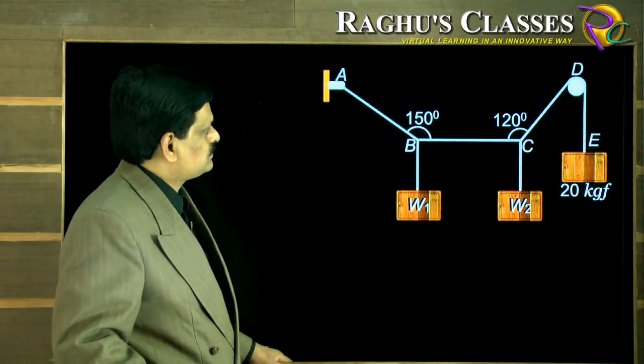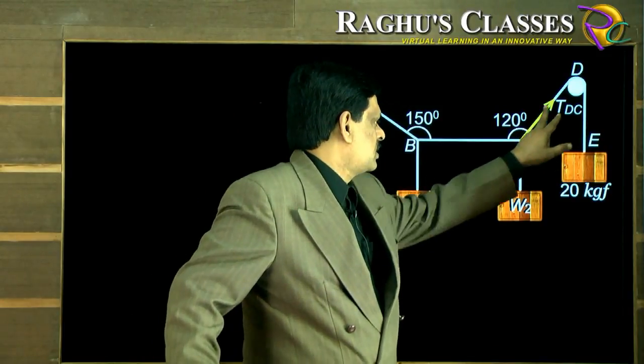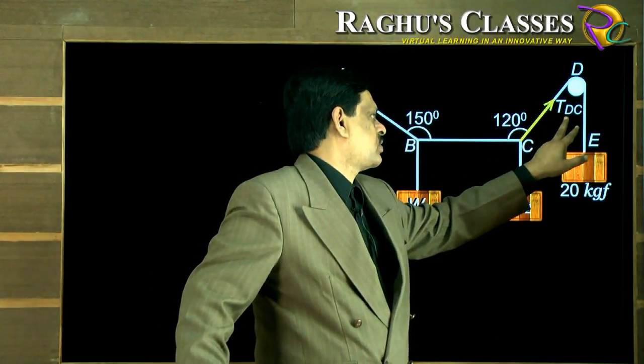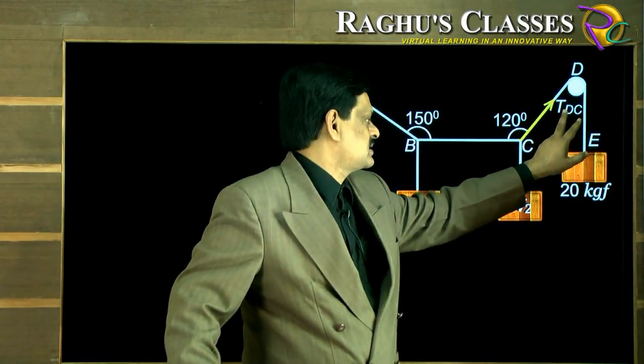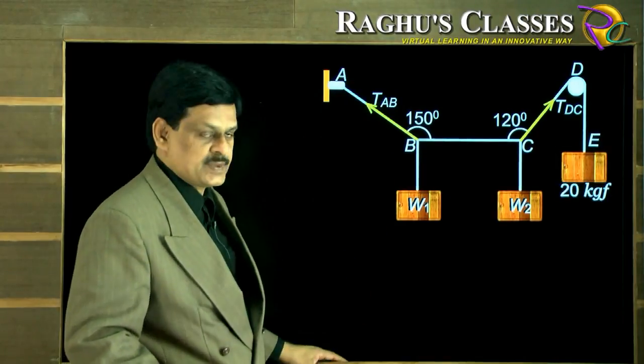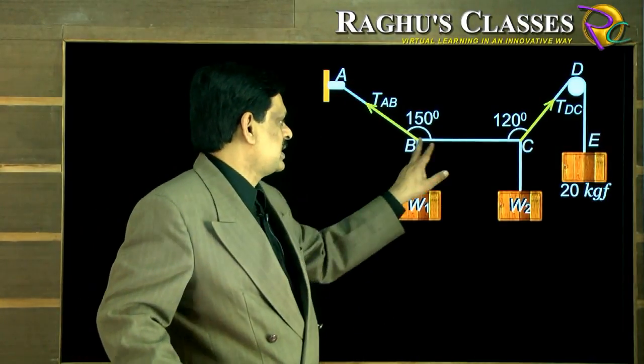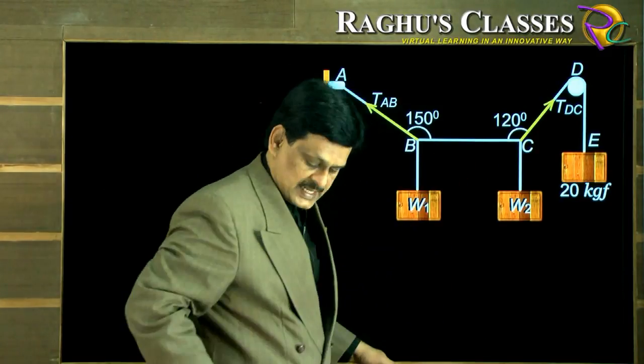Now let us put the forces here. There is a pull on this junction through the wire, what we call tension in the wire CD, we call TDC. Again, this wire pulls the junction this side, that is tension TAB, and the middle wire experiences tension in the inward directed arrows.